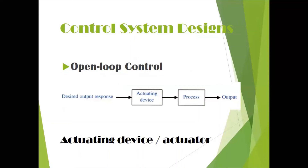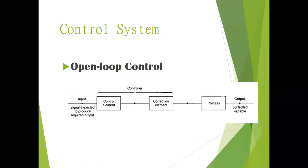Here comes another terminology: open loop control. In open loop control, the flow of signal is unidirectional — from input towards the output. We have a set point or desired response, an actuating device, a process, and the output. There is no way that the signal comes back. You can have an additional element like a correction element in the forward path from input to output, but the signal only flows from input toward the output.